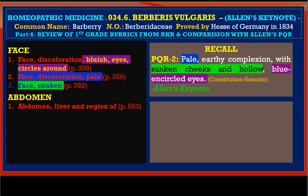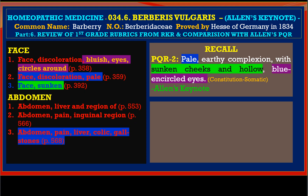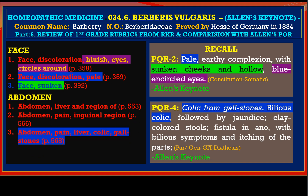Now we go to the abdomen. In the abdomen we have the following first grade rubrics in Kent Repertory: Abdomen, Liver, Colic, Gallstone. We find this represented in Allen's keynote in PQR4 as colic from gallstones — biliary colic or bilious colic. There is also Abdomen, Liver, Stitching, which may be given in Kent Repertory but may not be easily found in Allen's.